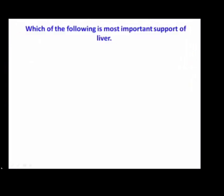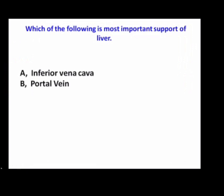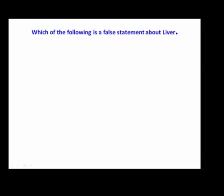Which of the following is the most important support of the liver — inferior vena cava, portal vein, hepatic artery, or hepatic veins? In the living, the most important support of the liver is intra-abdominal pressure, but in a cadaver it is said that we cannot take out the liver unless we cut the inferior vena cava. So inferior vena cava forms the most important support of the liver in a cadaver.